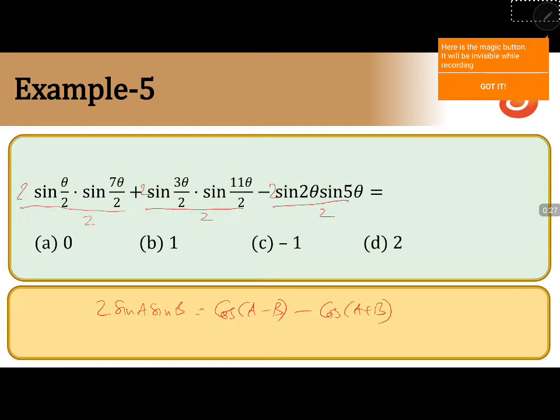So, 1 by 2 into 2 sin 7 theta by 2 sin theta by 2 plus 2 sin 11 theta by 2 sin 3 theta by 2.